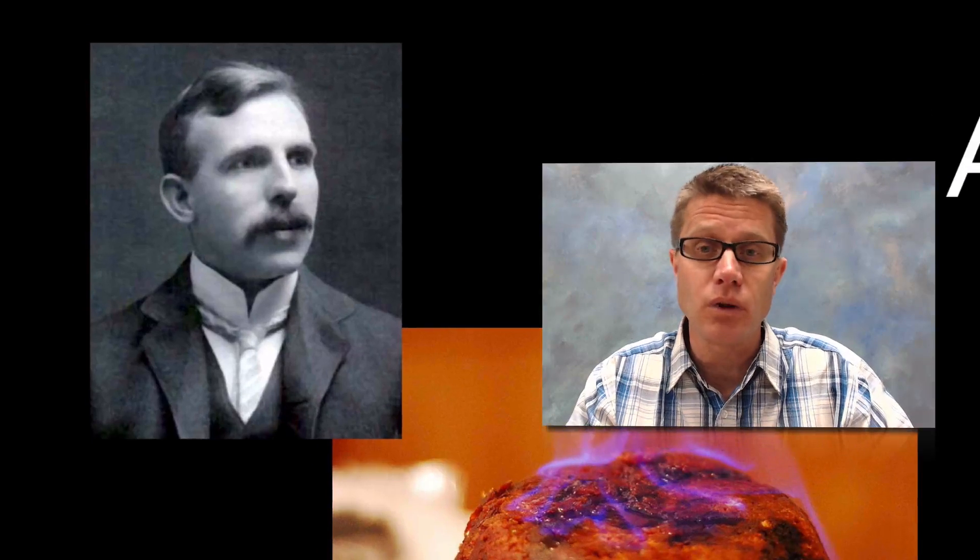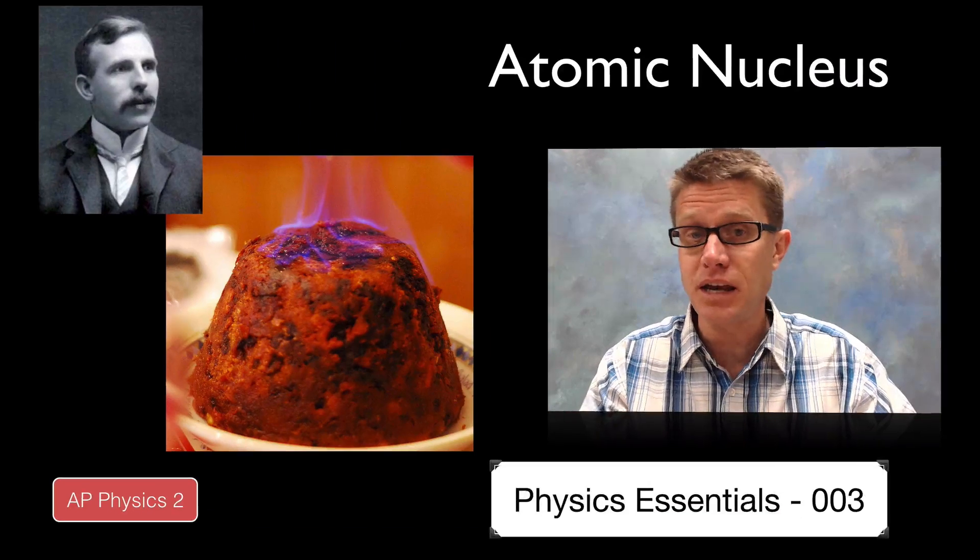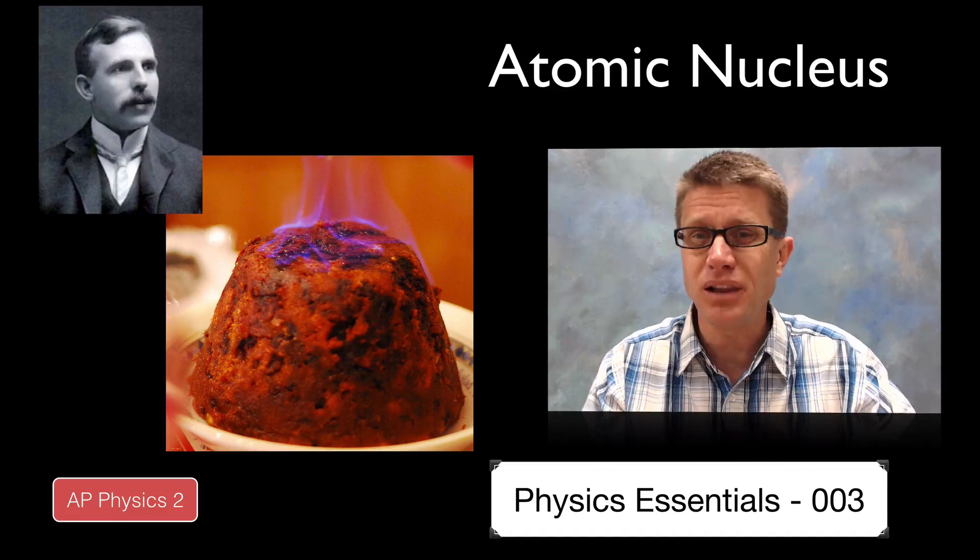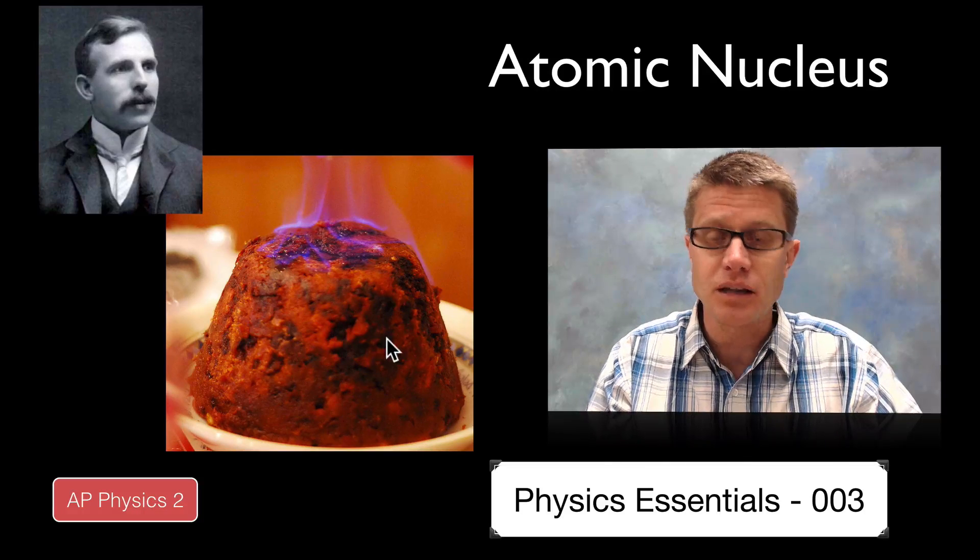Which was discovered by this man, Ernest Rutherford. J.J. Thompson had already discovered the electron which they knew had a negative charge. But they viewed the atom as a plum pudding. And this is what plum pudding looks like. It has got little plums in it and then it has got the pudding portion.